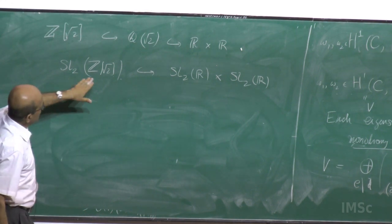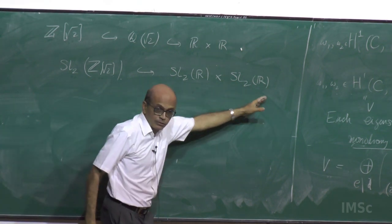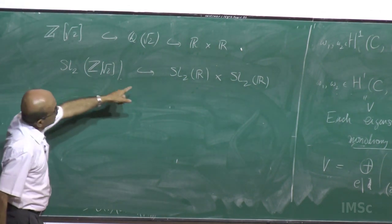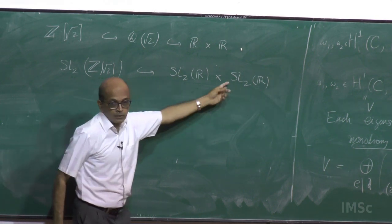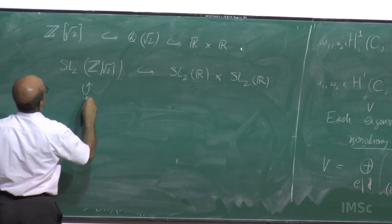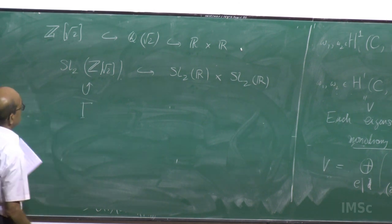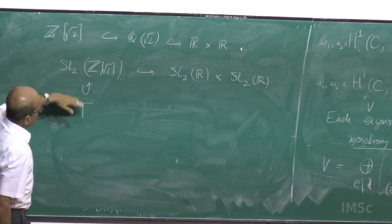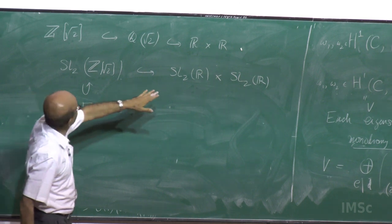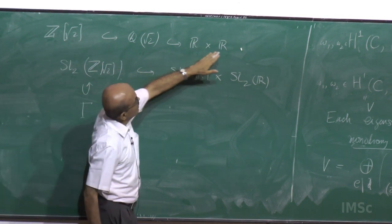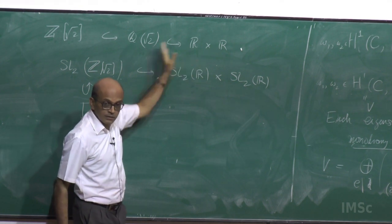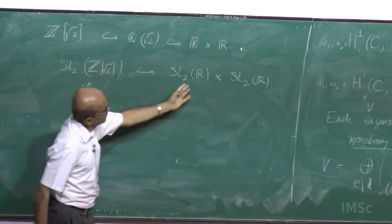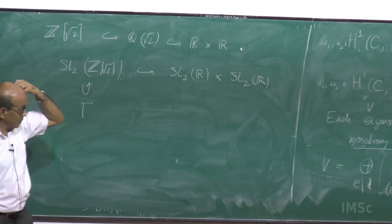The matrix a + b√2 goes to a + b√2 here and a − b√2 here — that is the map, and it is a discrete subgroup. In fact, one can show that this group is Zariski-dense in SL₂ × SL₂. Now, Z[√2] is dense in each of these embeddings — Z[√2] is dense in ℝ and also dense in the other projection. So although the group is discrete in the product, in each of these projections it is dense.